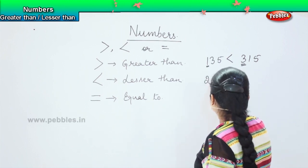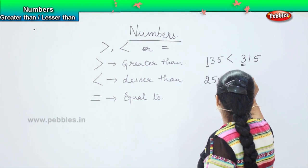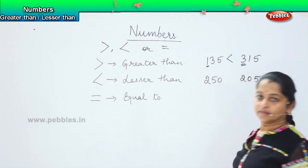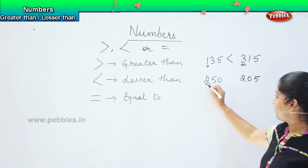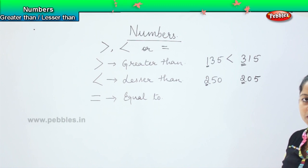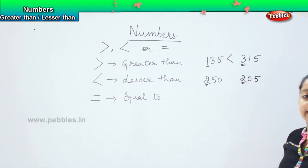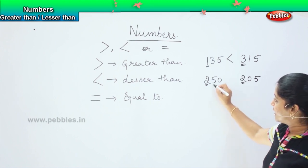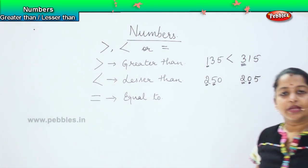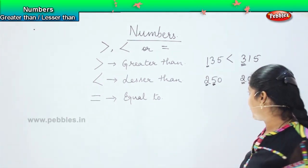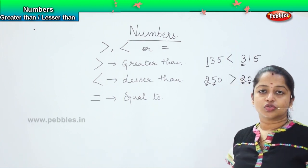Come to the next one: 250 and 205. Following the same rule, the hundreds place has 2 in both. So the hundreds place is the same. Now we will come to the next place value, which is the tens. In this, it says 5 and here it says 0. Is 5 bigger or 0? Yes, 5 is bigger, right? So, 250 is greater than 205.